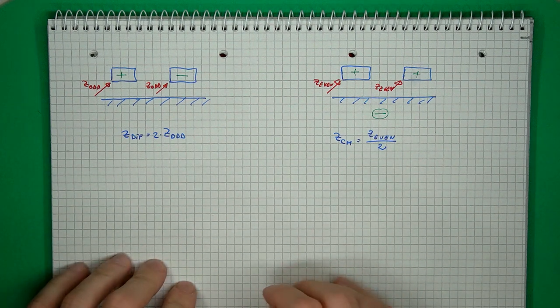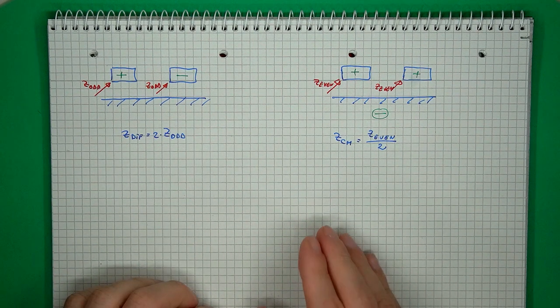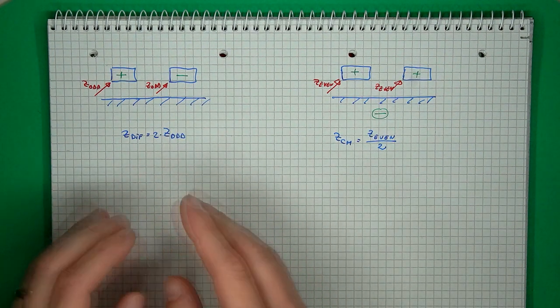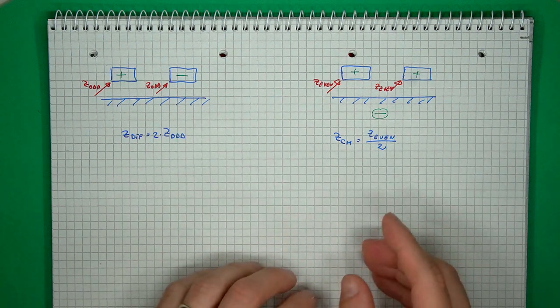You may have already noticed that in the simulation I didn't really measure differential impedance directly, but rather the single-ended impedance when the structure was driven with a differential signal. If you've ever studied differential structures and their impedance, you may have come across the terms odd mode and even mode impedance — that's the next thing to look at.